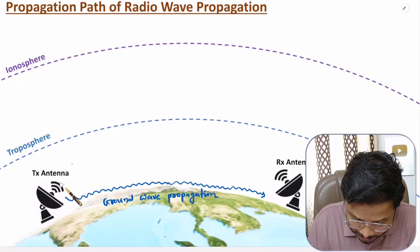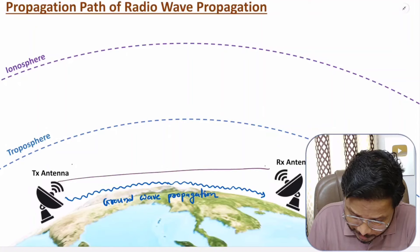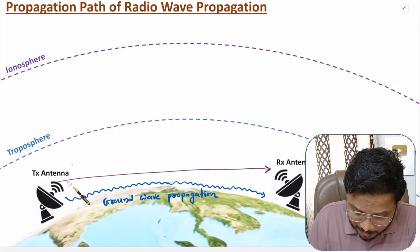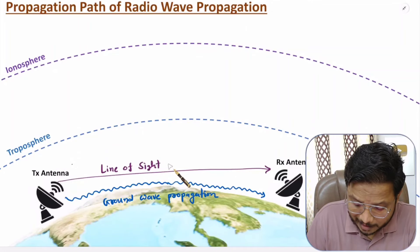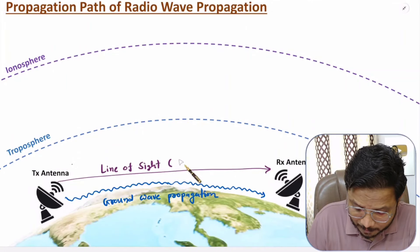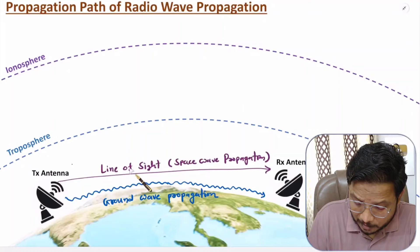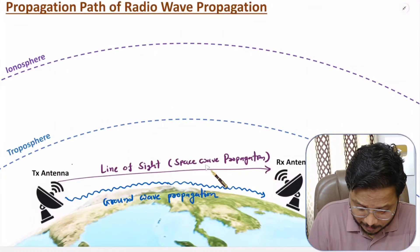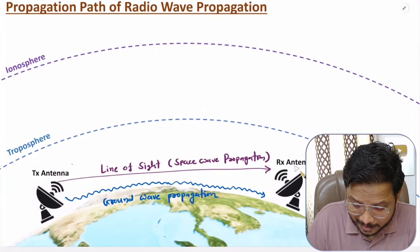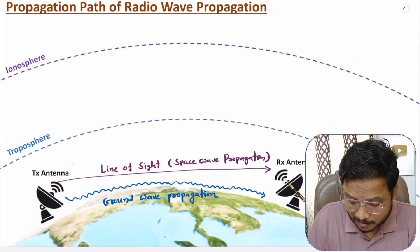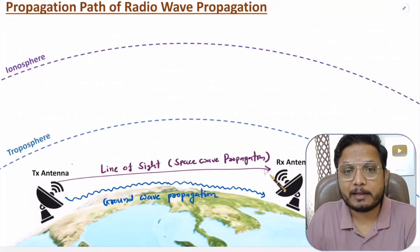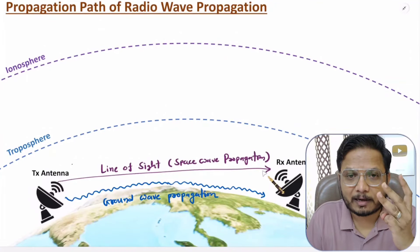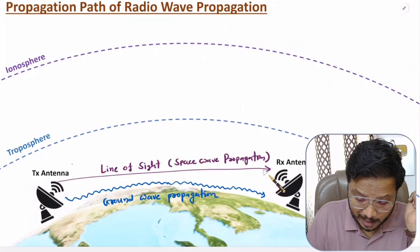Now I'll discuss the second method, which is space wave propagation. In space wave propagation, electromagnetic waves travel in a straight line, which is why it is also referred to as line of sight communication. In space wave propagation, the transmitting antenna and receiving antenna can see each other directly, because propagation of electromagnetic waves happens in a straight line.